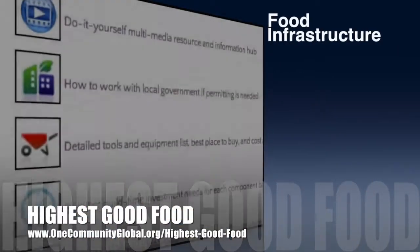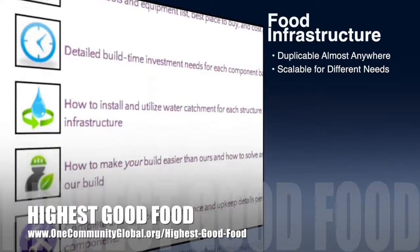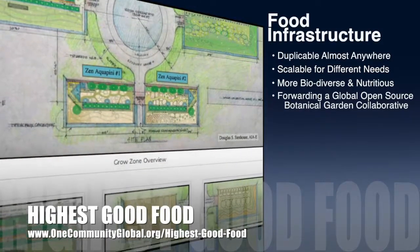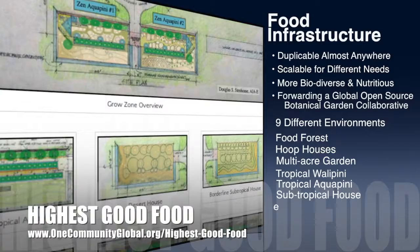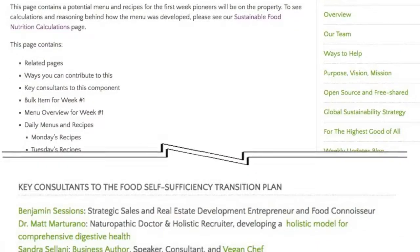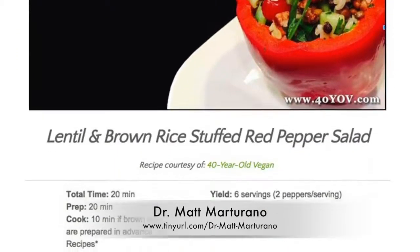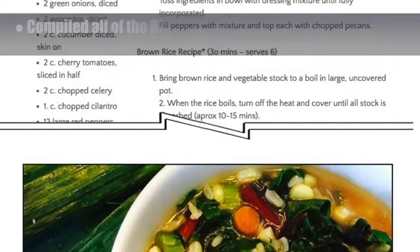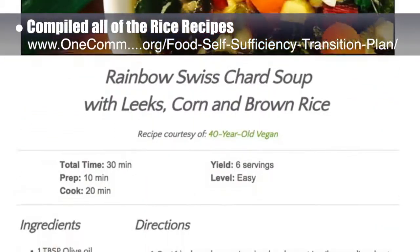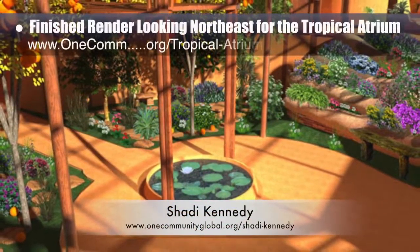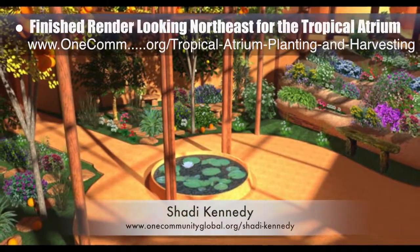OneCommunity's approach to highest good food is duplicable almost anywhere, scalable for different needs, more biodiverse and nutritious, part of forwarding a global open source botanical garden collaborative, and includes nine different free shared and duplicable growing environments. As part of the development of our Food Self-Sufficiency Transition Plan — featuring contributions from naturopathic Dr. Matt Martorano, creator of the Coherent Model for Comprehensive Digestive Health — this week we compiled all of the rice recipes, which will be added to our updated recipe strategy currently in progress. Shadi Kennedy, artist and graphic designer, also finished a render looking northeast for the Tropical Atrium Planting and Harvesting Plan page.